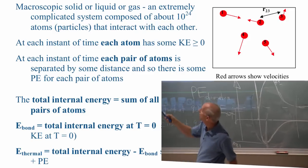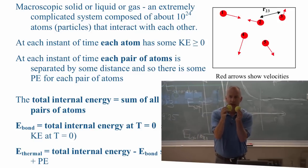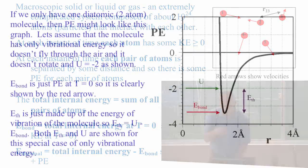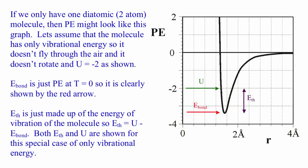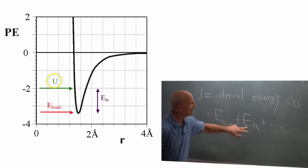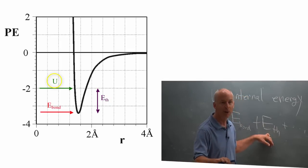I've also introduced the symbol U for total internal energy — you may have seen it in chemistry. It's our symbol for total internal energy, meaning add up all the energies internal to the system: bond energy and thermal energy. For our purposes, that's all we'll worry about, though there could also be atomic or nuclear energies in that internal energy.